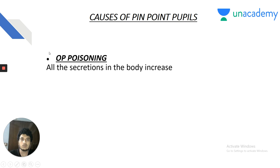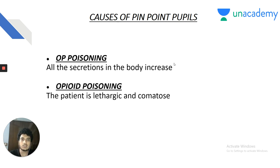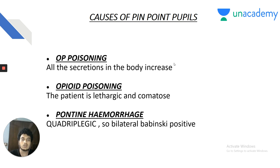Organophosphates are irreversible inhibitors of acetylcholinesterase, increasing acetylcholine secretion throughout the body — all secretions increase. In opioid poisoning, the patient is lethargic and comatose, with history of opioid drug consumption and signs of IV drug abuse on brachial or cephalic veins. In pontine hemorrhage, you see the classical locked-in syndrome with quadriplegia.